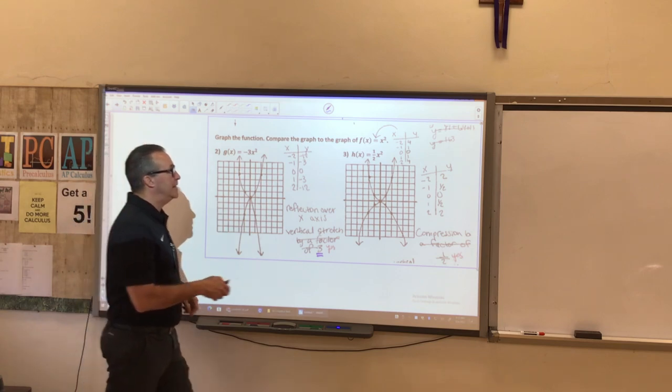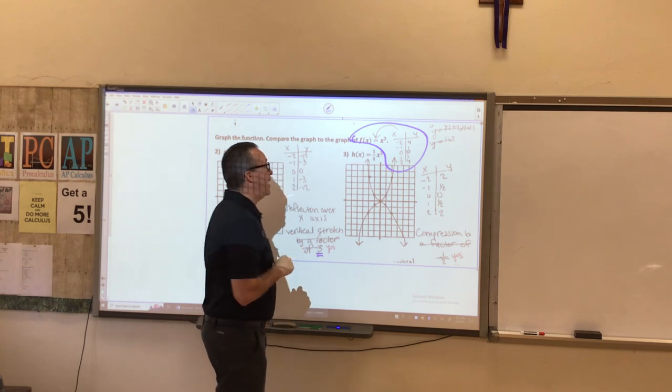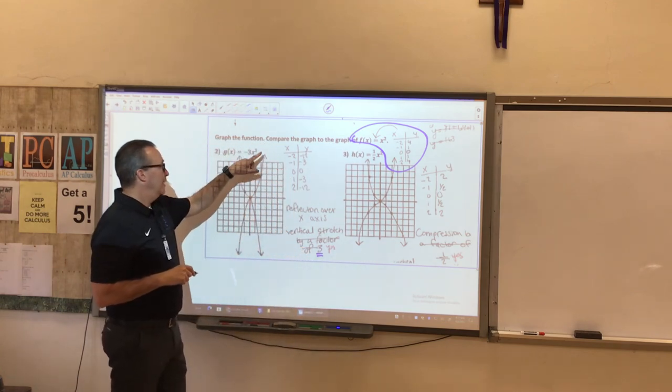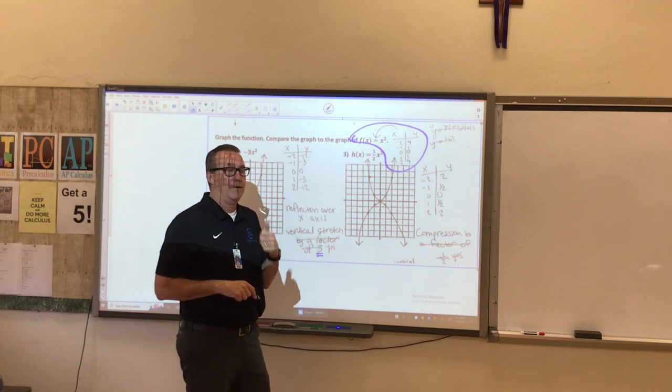Now, you do have to have a t-table for x equals x squared, and you did do that, and you graphed x equals x squared on all the graphs, so you did that right. Good job.